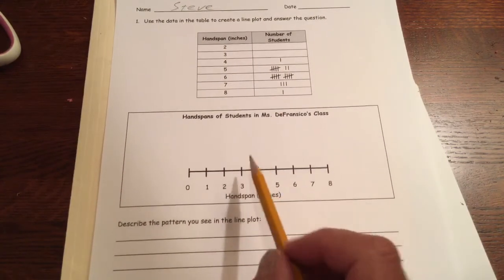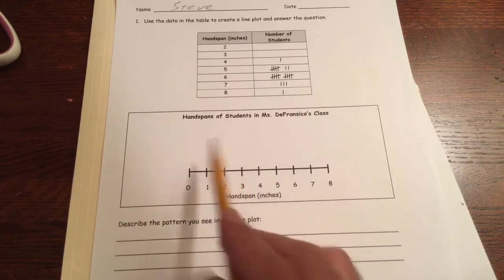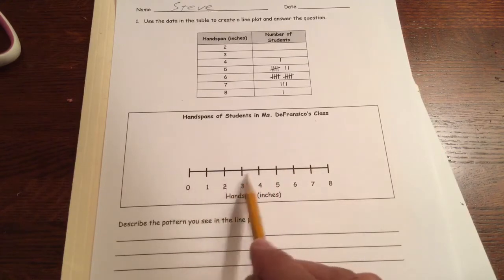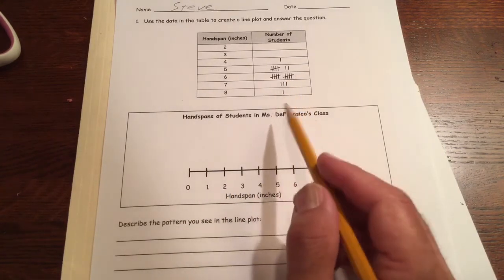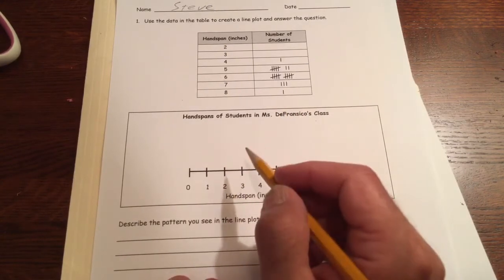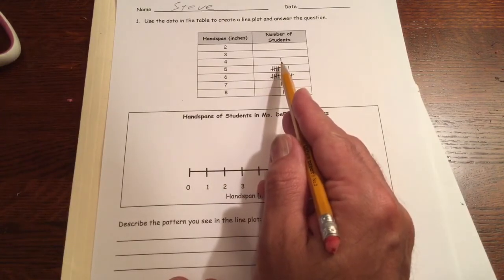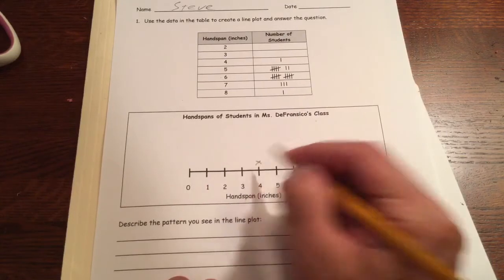So we're gonna make a line plot here, hand span in inches. We have the title already set up for us. Here's our line, it's already labeled, all we have to do is plot the students. I'm gonna make X's, one for each student. First student is a four inch hand span, so I'm gonna make an X right there. That's just one.